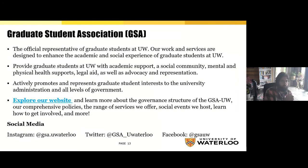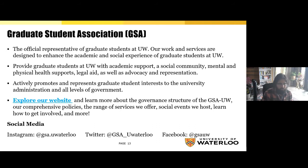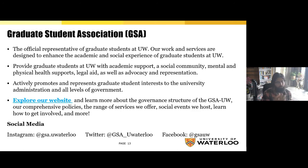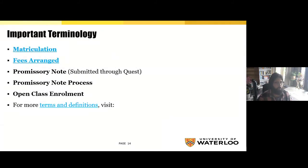The next important thing to know is the Graduate Student Association, or GSA — the official representative of graduate students at UW. Their work and services are designed to enhance the academic and social experience of graduate students. They provide academic support, social community, mental and physical health supports, legal aid, as well as advocacy and representation. They also actively promote and represent graduate students' interests to the university administration and all levels of government. You can explore their website for more information and follow their social media for updates.